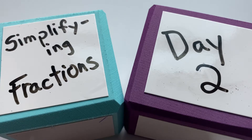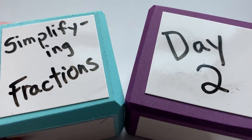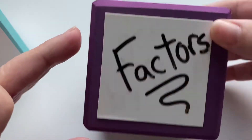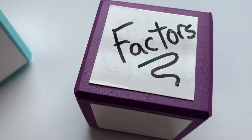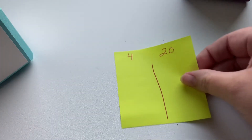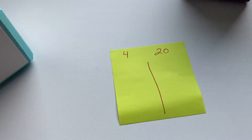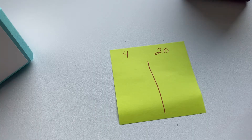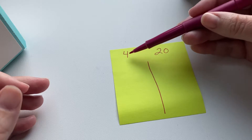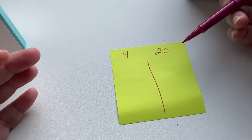Hi, welcome to day two of simplifying fractions, and today we're going to get into greatest common factors, or sometimes people call them the GCF, the greatest common factor. So yesterday we talked about factors and how they're all the numbers that go into a specific number. So a greatest common factor would be the biggest, the greatest factor that any two numbers have in common.